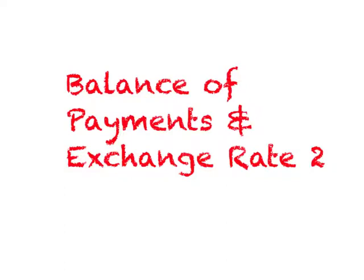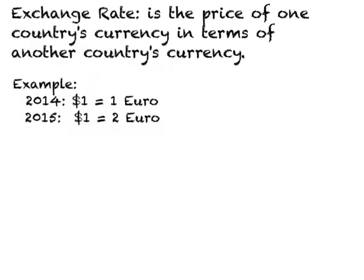Now let us examine the second part of this topic, and this is exchange rate. Exchange rate is simply the price of one country's currency in terms of another country's currency. For example, how much is the worth of one US dollar in terms of Japanese Yen, or Chinese Yuan, or the Euro? Whenever we look at foreign exchange or exchange rate, one of the terms that often comes up is depreciation or appreciation of currency.